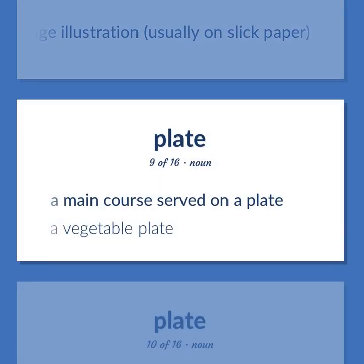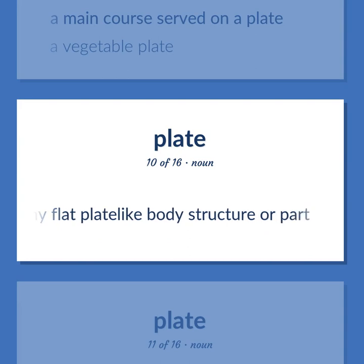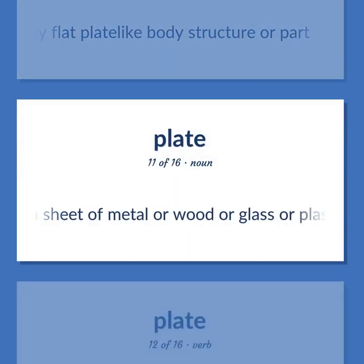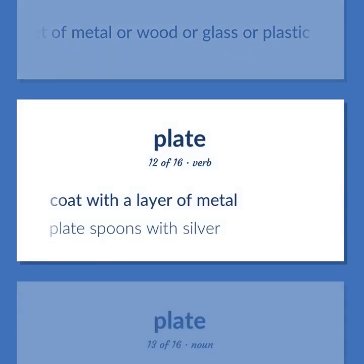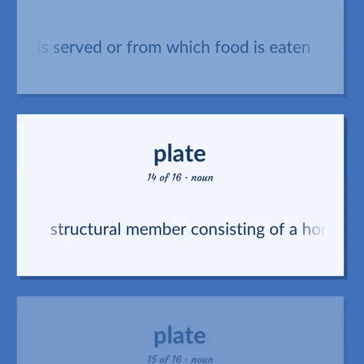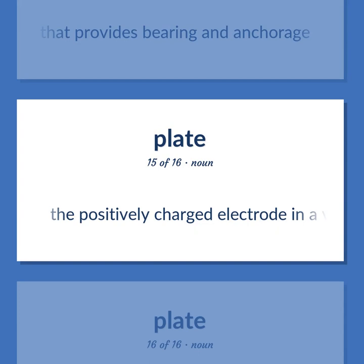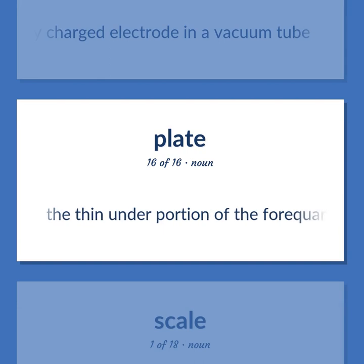A main course served on a plate. A vegetable plate. Any flat plate-like body structure or part. A sheet of metal or wood or glass or plastic. Coat with a layer of metal. Plate spoons with silver. Dish on which food is served or from which food is eaten. Structural member consisting of a horizontal beam that provides bearing and anchorage. The positively charged electrode in a vacuum tube. The thin under portion of the forequarter.